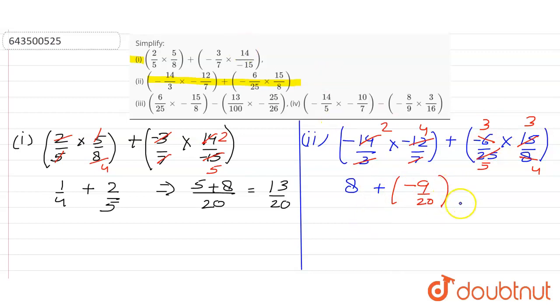So if I open the bracket, I'll get 8 minus 9 by 20. So after solving it further, I'll get 160 minus 9 by 20. If I take LCM for both the terms, answer will be 151 by 20, will be the answer for the second part of the problem. Now let's move on to the third part here.